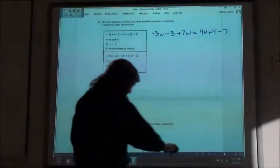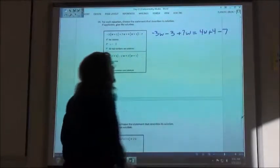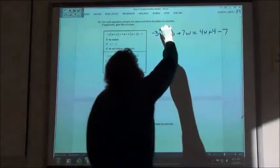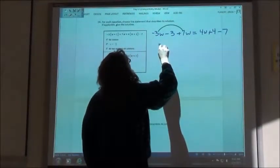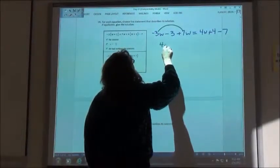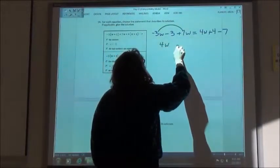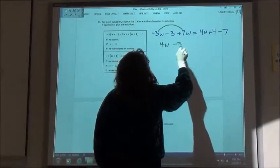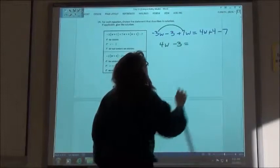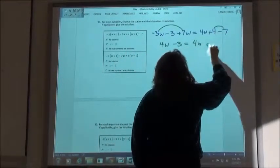Next thing I want to do. Okay. I want to do my 3w and my 7, which is going to be 4w. 4w minus 3 equals 4w minus 3.